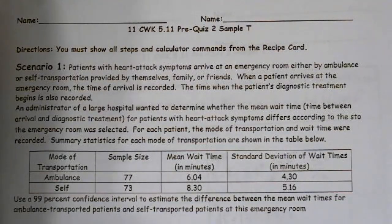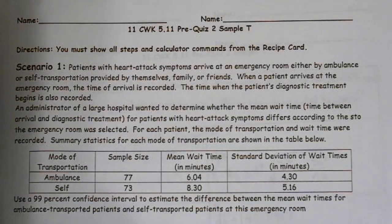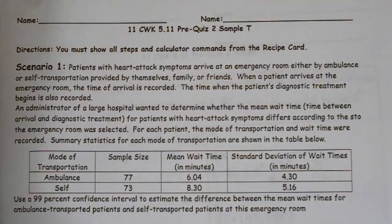When a patient arrives at the emergency room, the time of arrival is recorded. The time when the patient's diagnostic treatment begins is also recorded. An administrator of a large hospital wants to determine whether the mean wait time between arrival and diagnostic for patients with heart attack symptoms is different according to the way that they were delivered. For each patient, the mode of transportation and wait time are recorded.